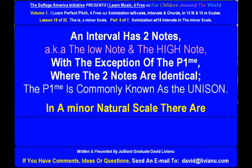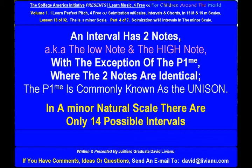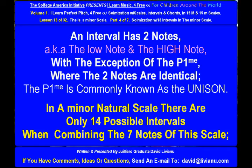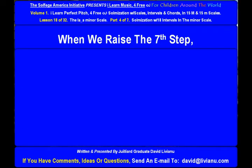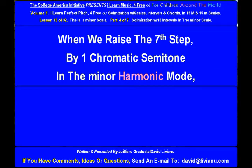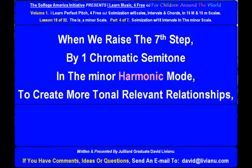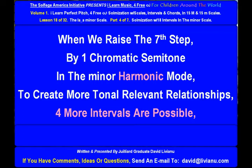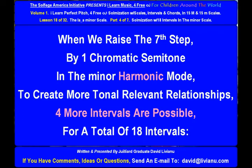In a minor natural scale, there are only 14 possible intervals when combining the seven notes of this scale. When we raise the seventh step by one chromatic semitone in the minor harmonic mode to create more tonal relevant relationships, four more intervals are possible for a total of 18 intervals.